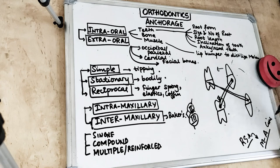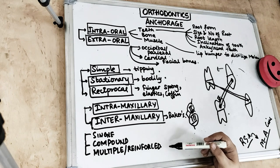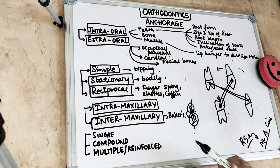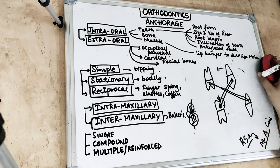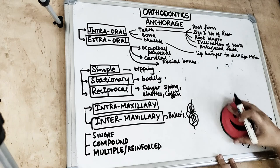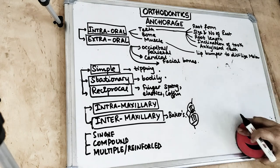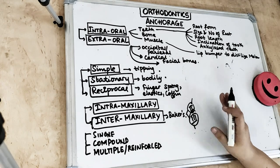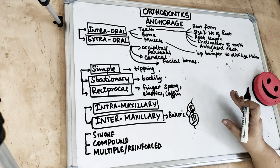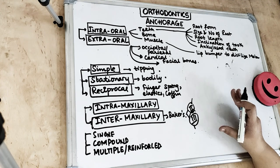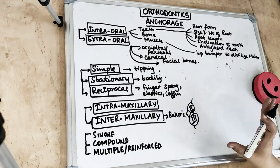Now talking about simple, compound, and multiple or reinforced anchorage - these are classified based on the number of anchorage units. Simple anchorage uses just one anchorage unit. Compound anchorage uses support from more than one tooth; it is used to move teeth with less support. Multiple or reinforced anchorage uses multiple sources of anchorage support.